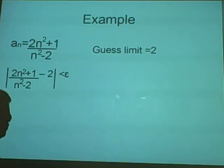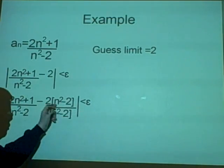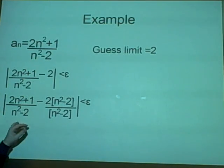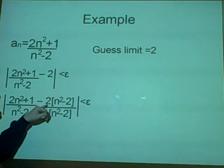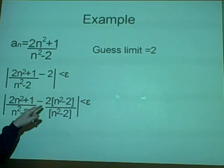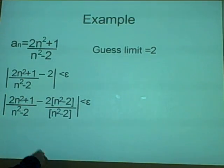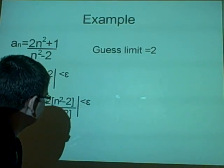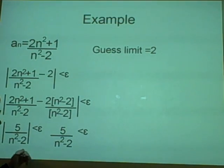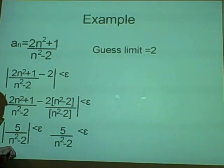Next we rearrange to get a function of n. First we rewrite 2 as (n² - 2)/(n² - 2), then combine: (2n² + 1 - 2(n² - 2)) / (n² - 2). The 2n² terms cancel, and minus negative four becomes plus four, so we have 5 / (n² - 2). Next we pick our value for n — since the limit is 2, we use n = 2: 2² - 2 = 2, which is positive, confirming we can drop the modulus signs.